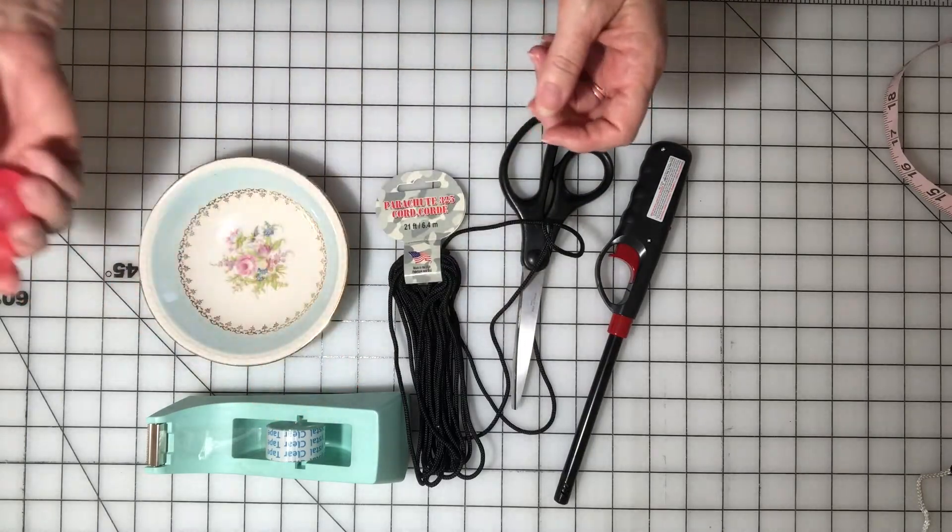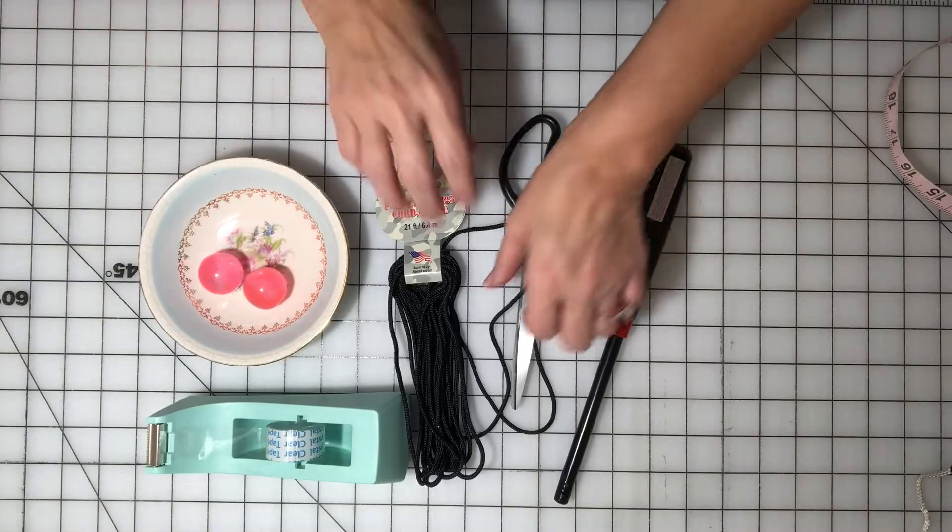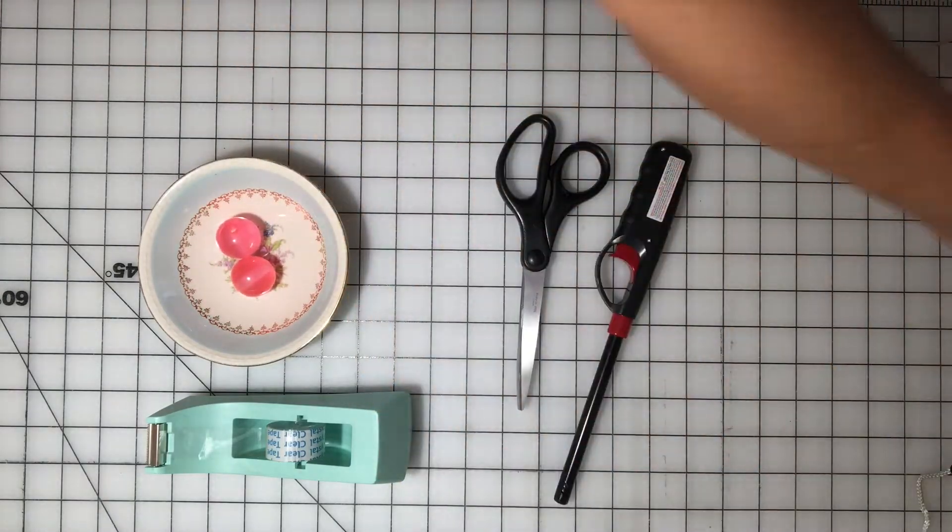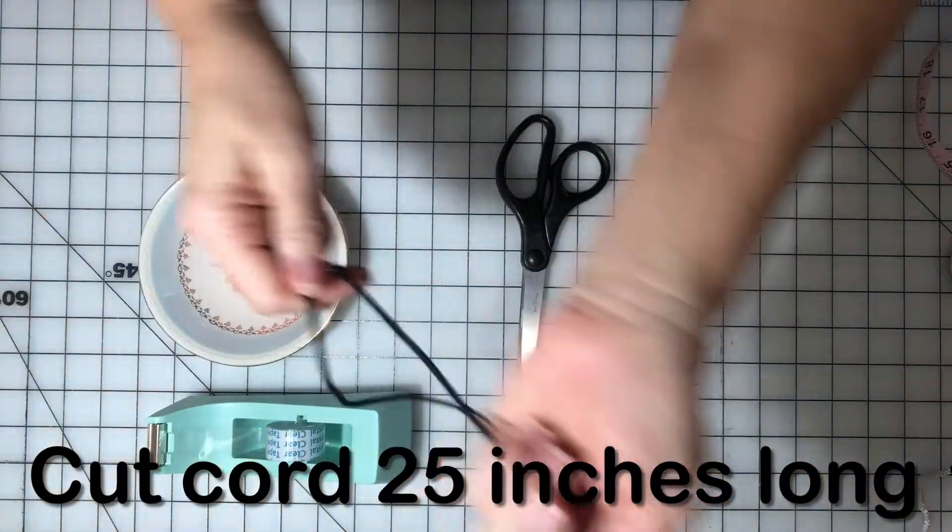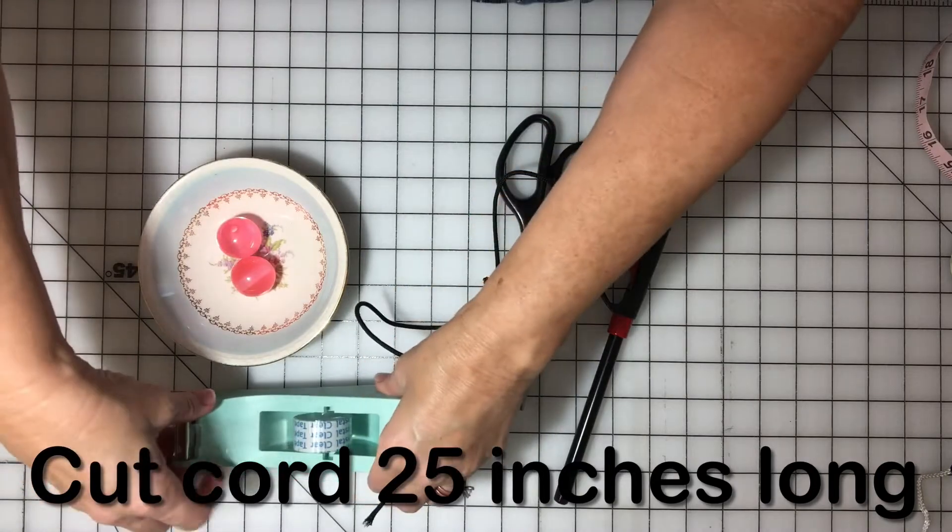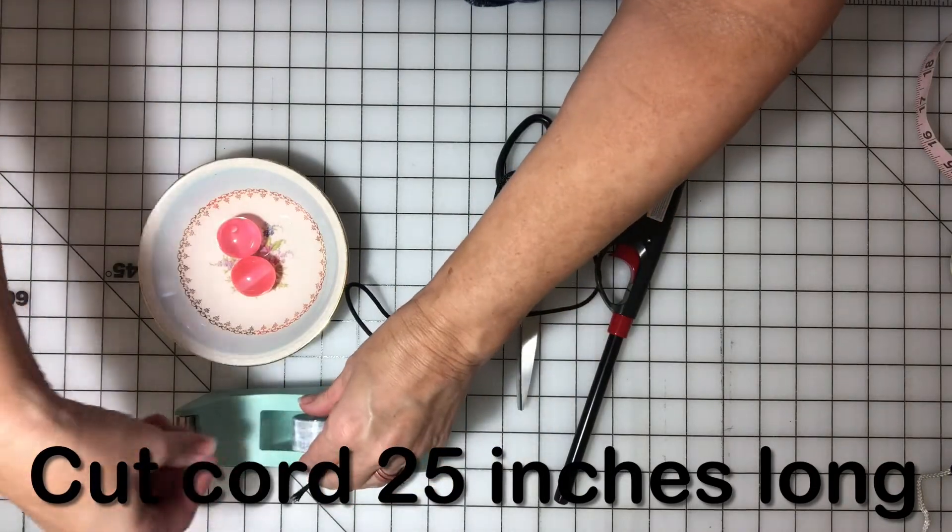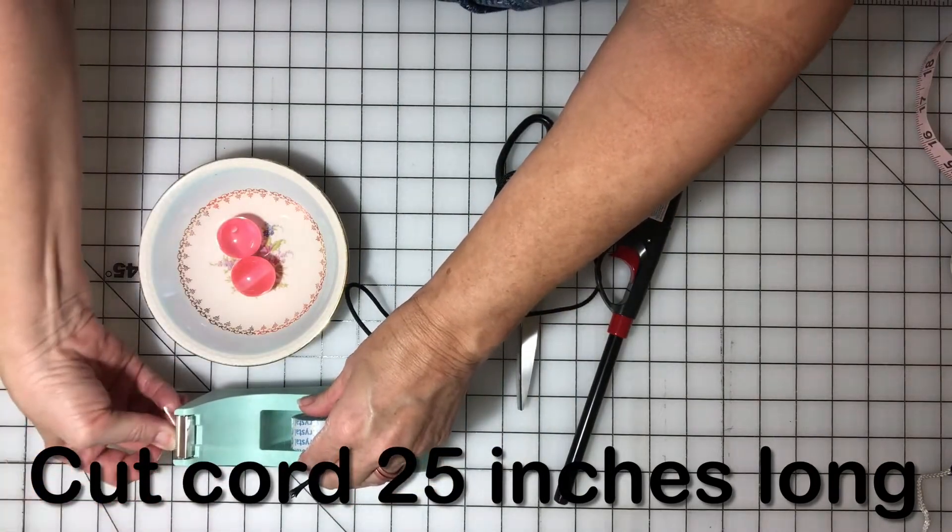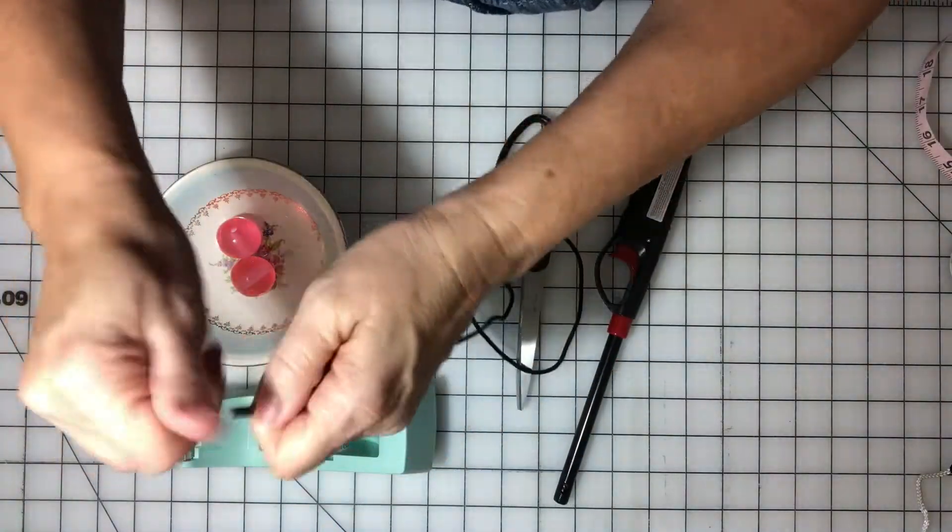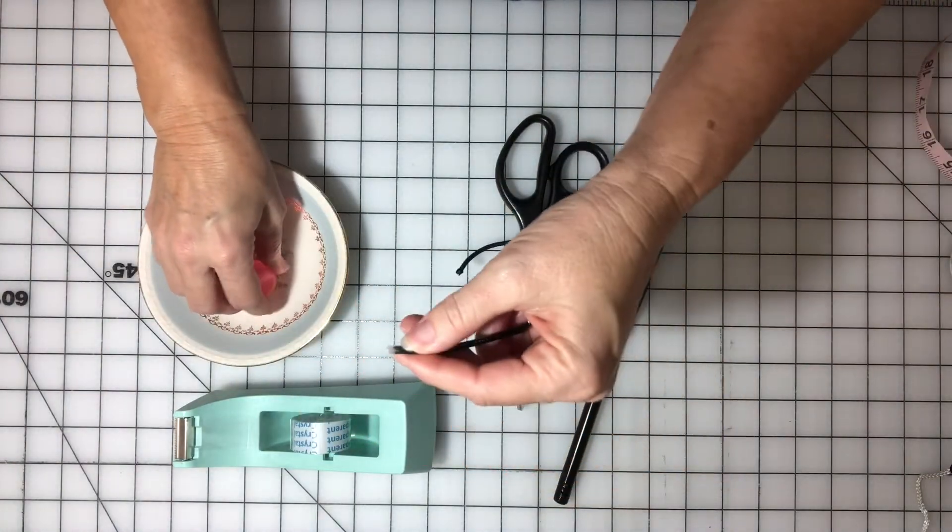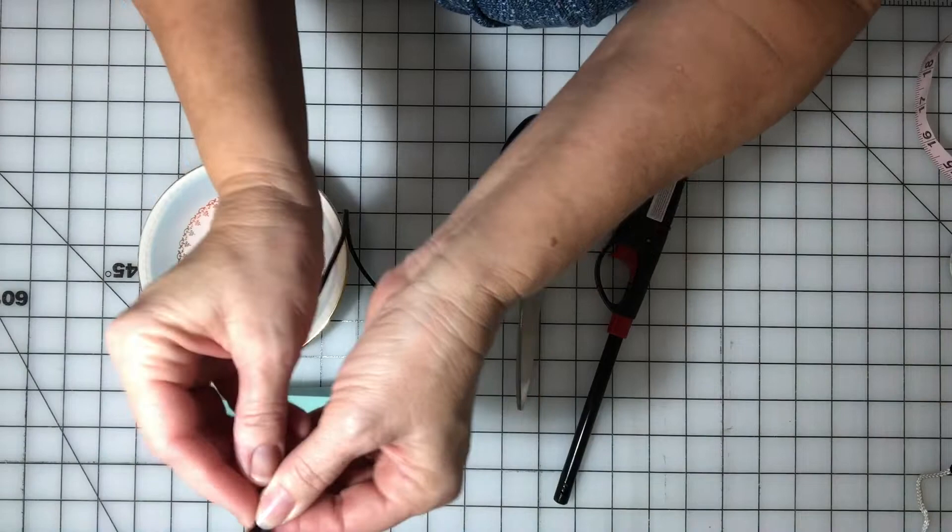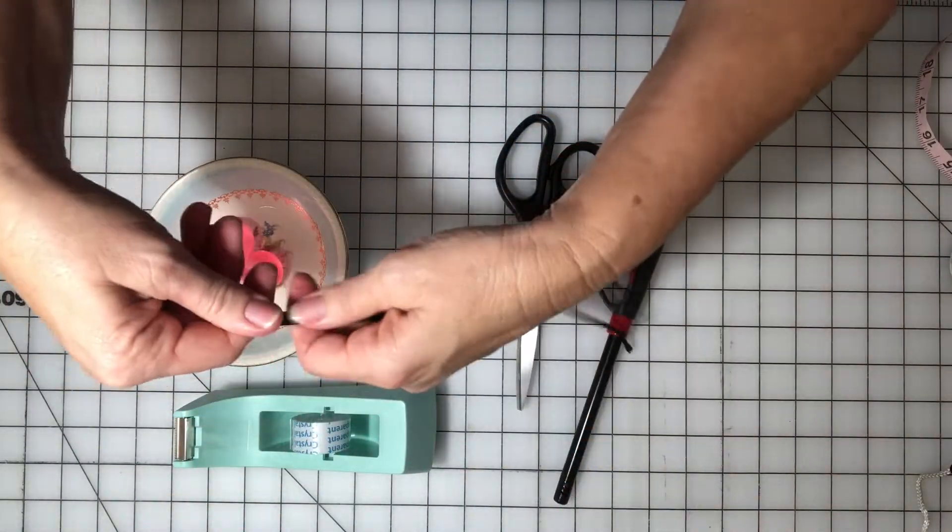So you're gonna take your parachute cord. I already cut a piece that's 25 inches long. And because it's frayed like this, I'm going to take a piece of scotch tape to make it easier to thread. But before I do that, I'm going to even these up like this.